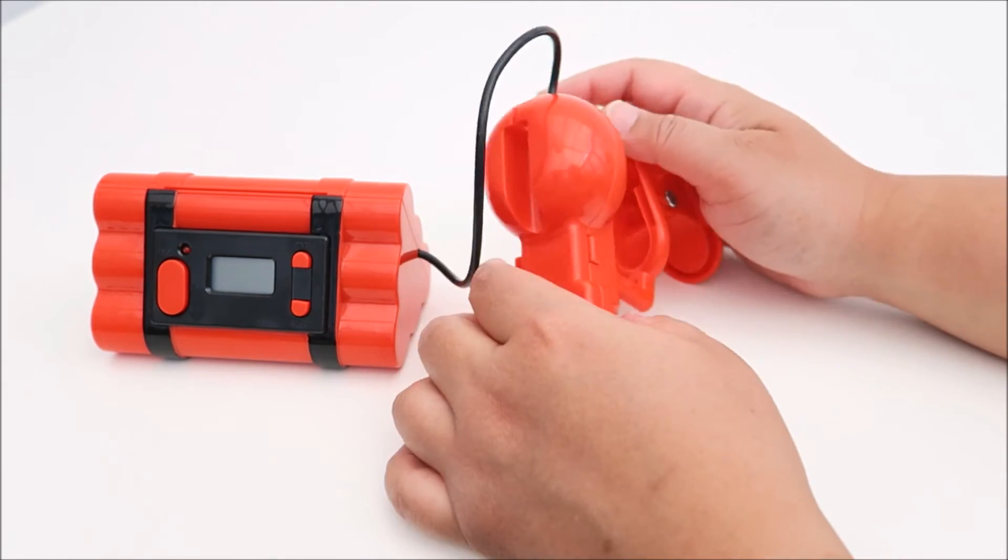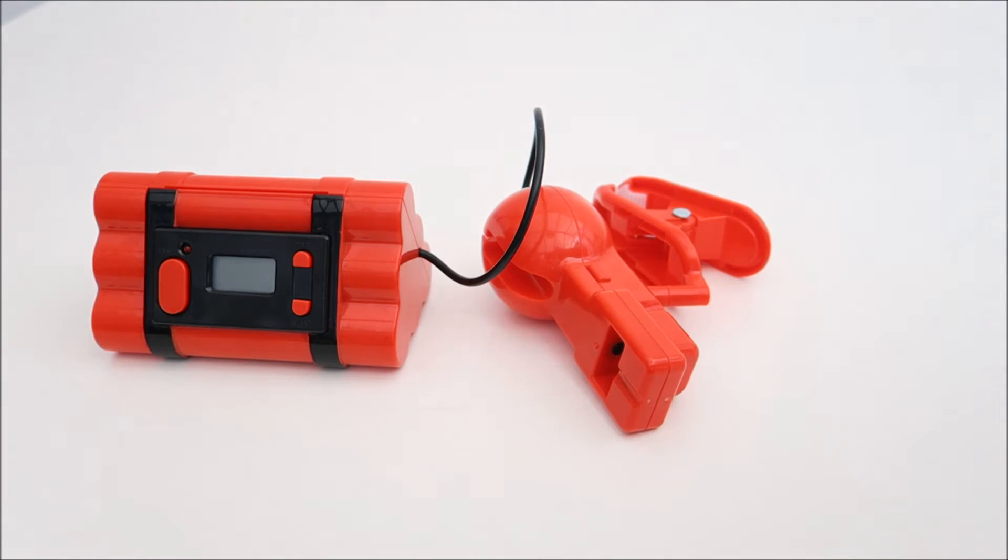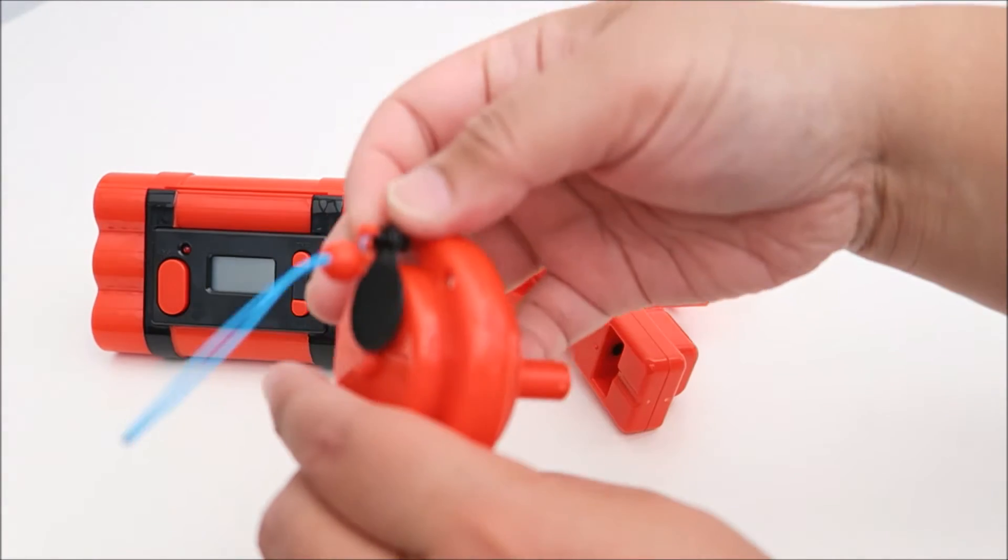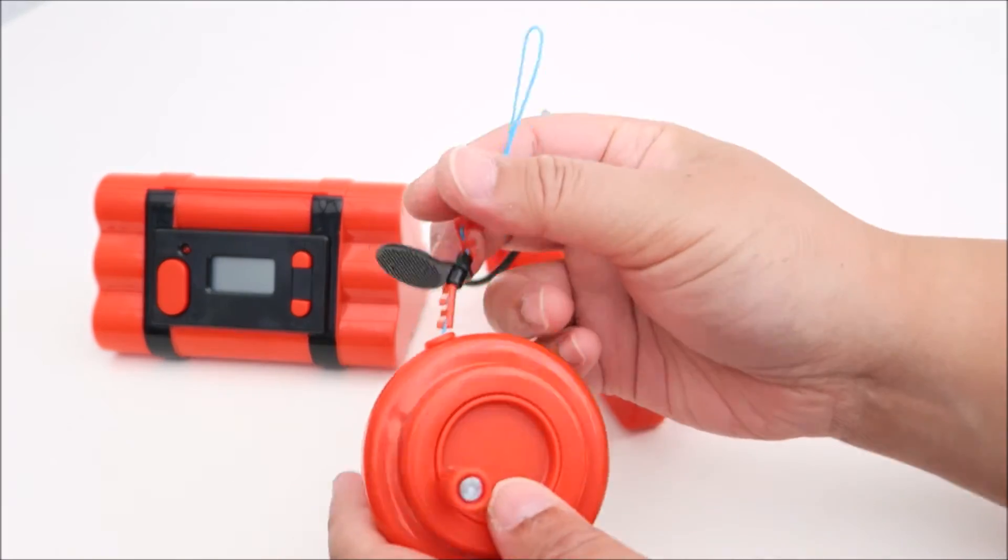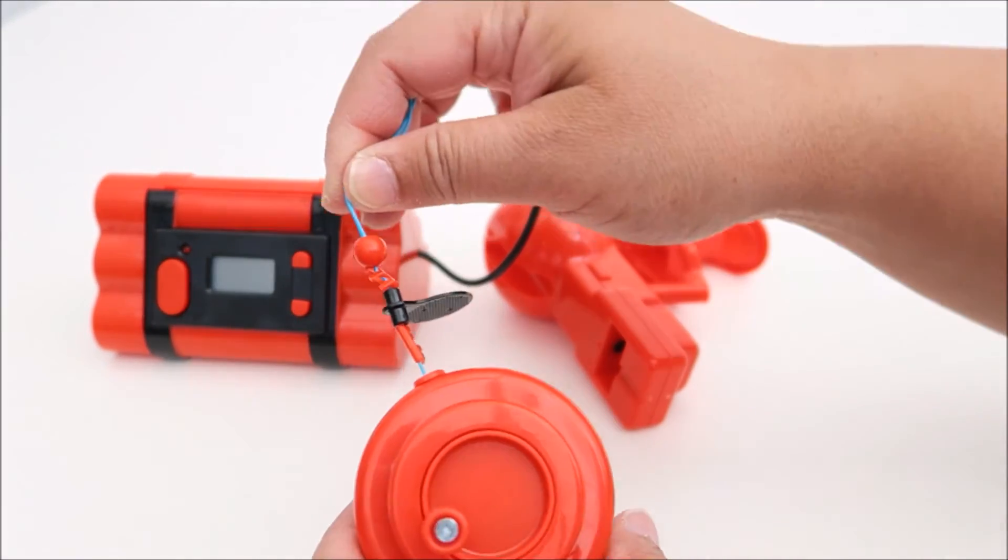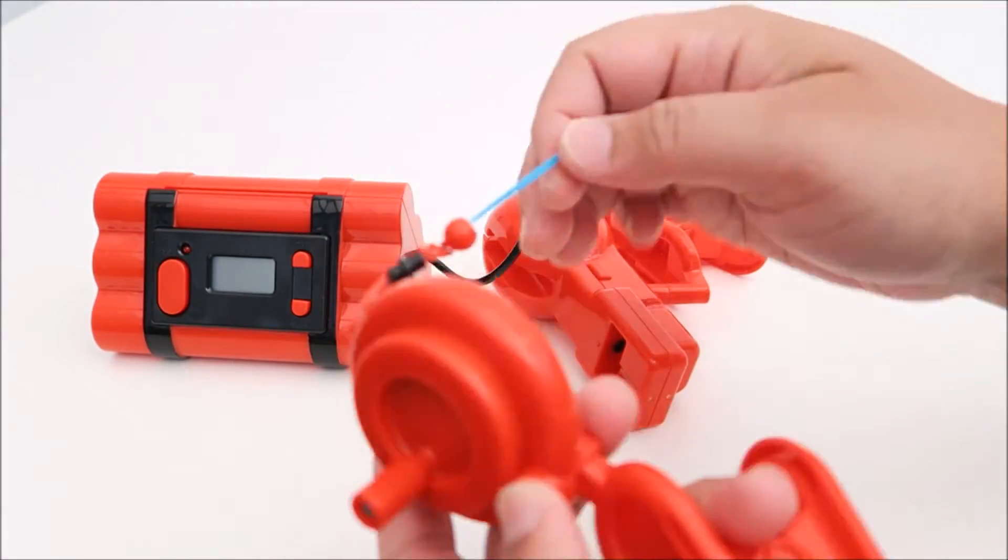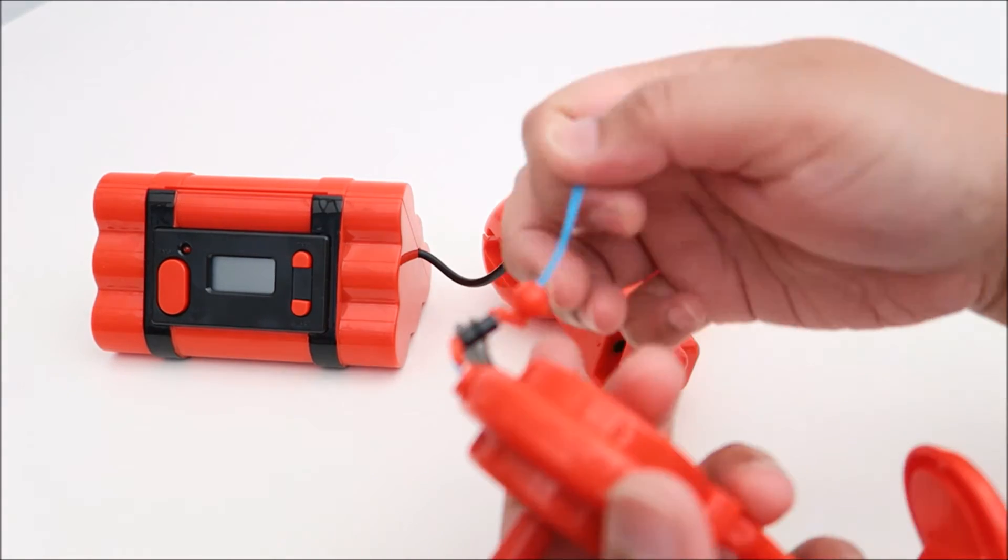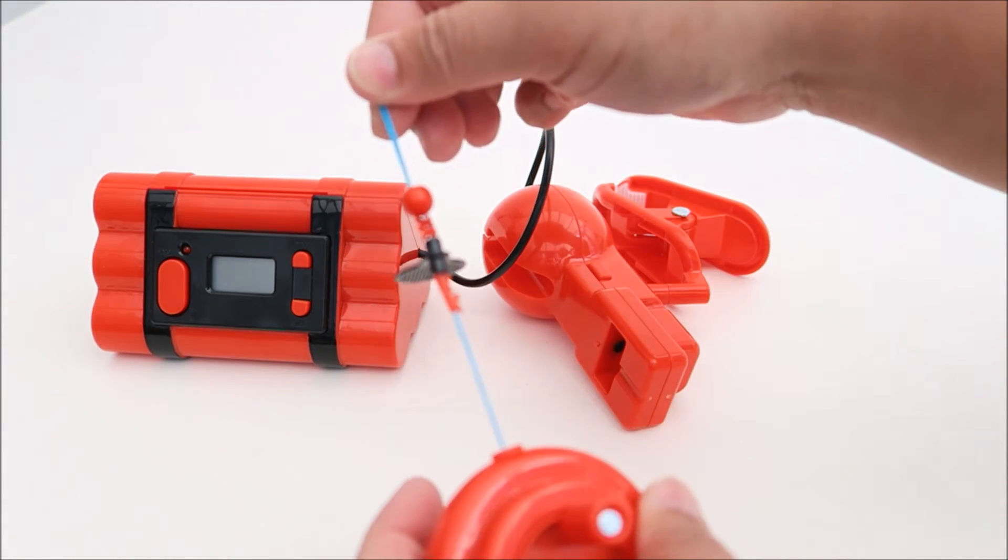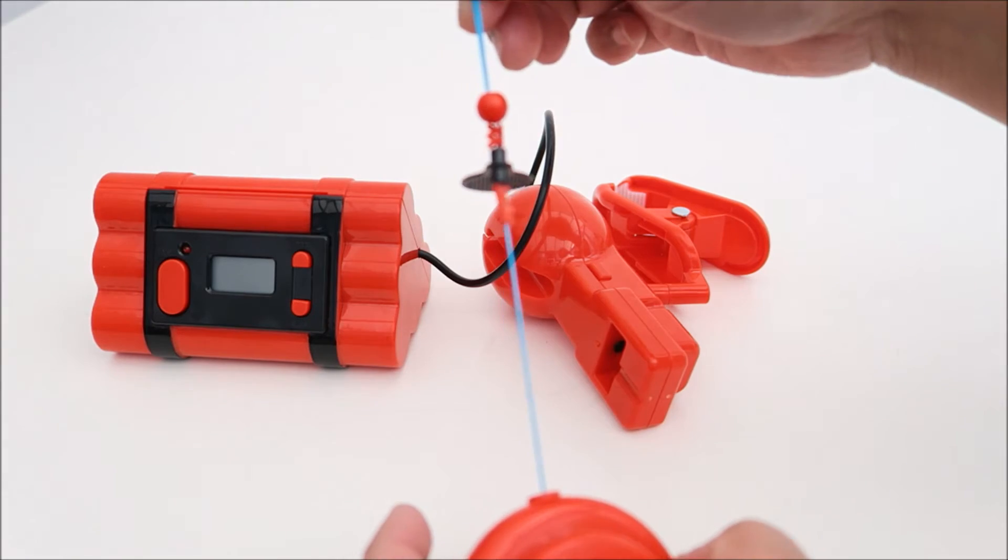So for example, we lock it now. And I'm going to use the reel. This is the reel clamp. And you press this to release the string. This has about 10 meters long.